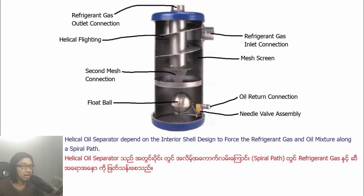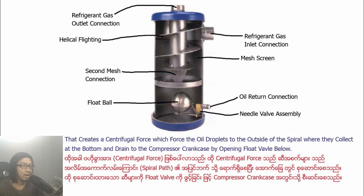Helical oil separators depend on the interior spiral design to force the refrigerant gas and oil mixture along a spiral path. They create a centrifugal force which forces the oil droplets to the outside of the spiral, where they collect at the bottom and drain to the compressor crankcase by opening the float valve below.